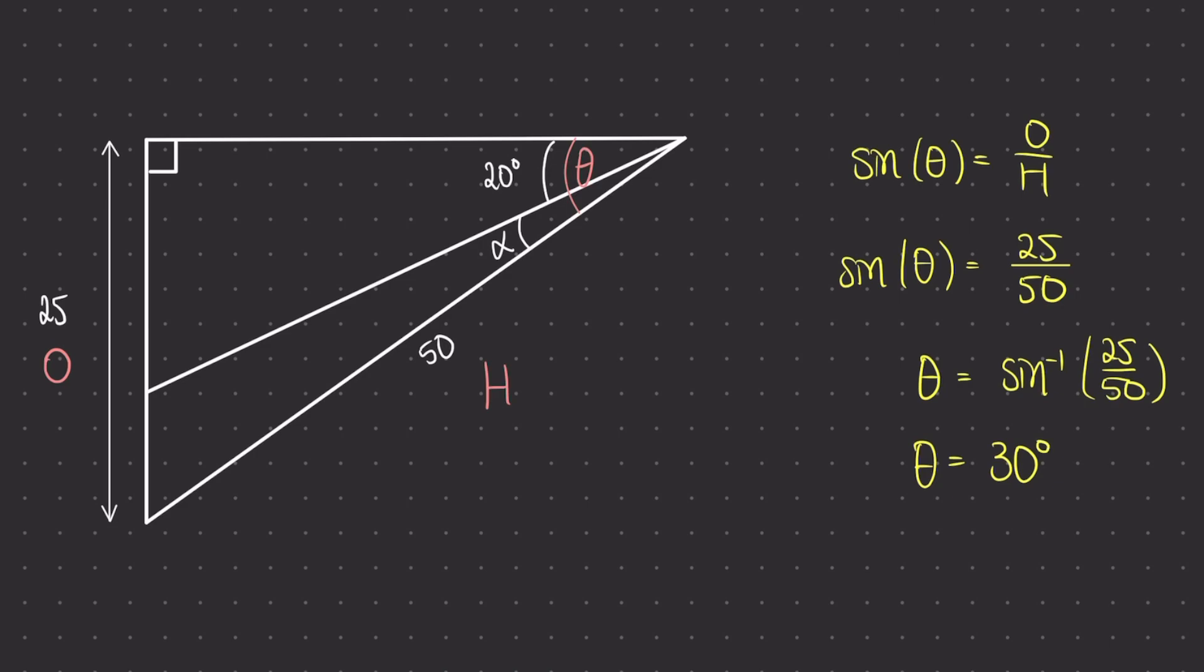So with theta being 30 degrees, I can now subtract away that 20 degrees to work out the value of alpha, which is 10.